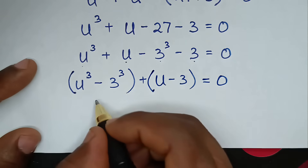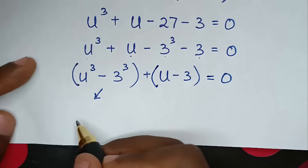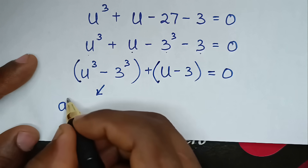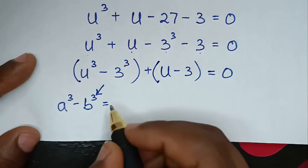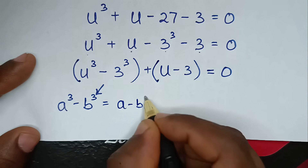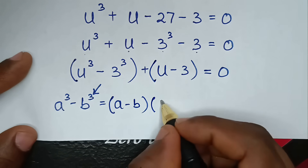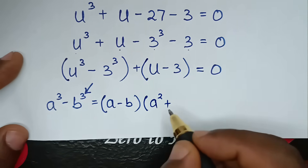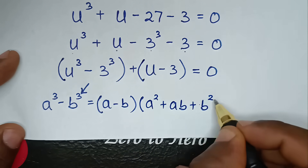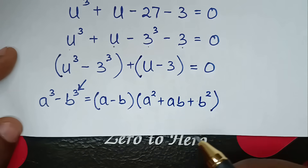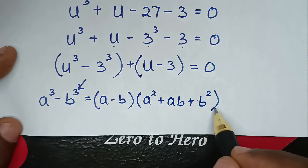From this part, u³ - 3³ is in the form of the difference of cubes rule: a³ - b³ = (a - b)(a² + ab + b²). Comparing, when a³ = u³, then a = u; and when b³ = 3³, then b = 3.